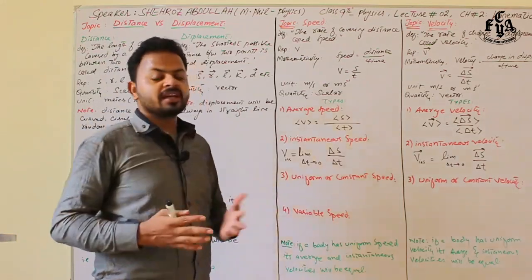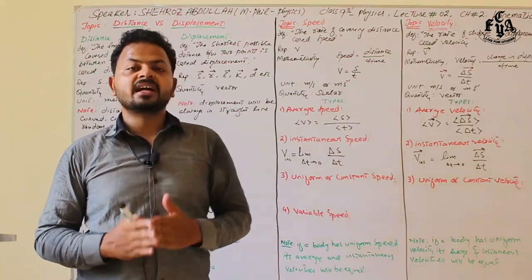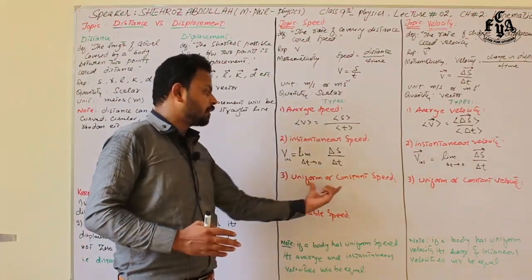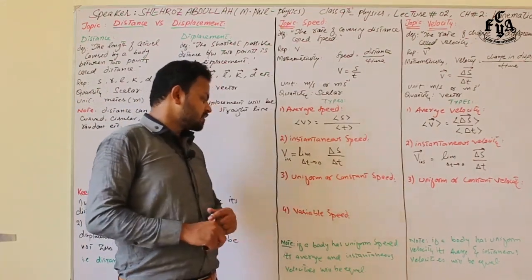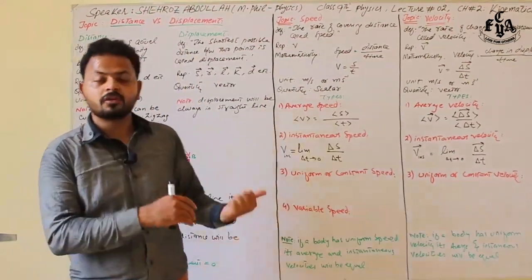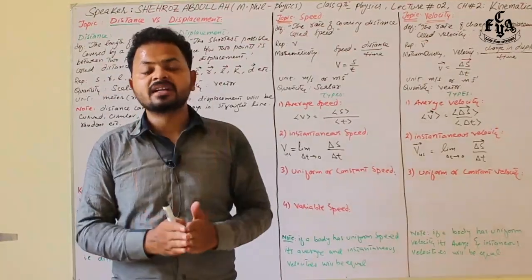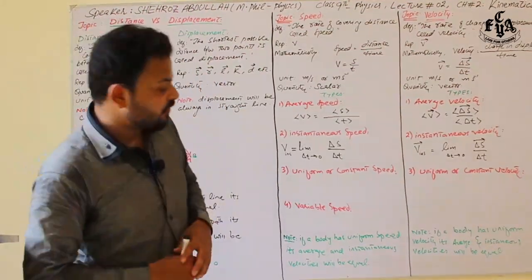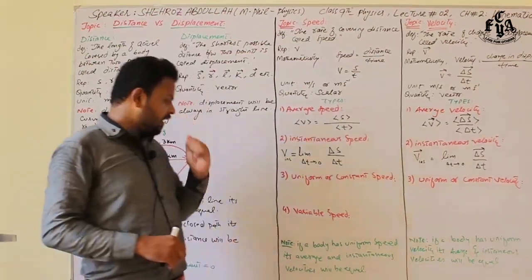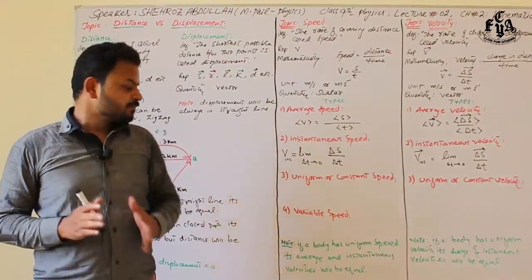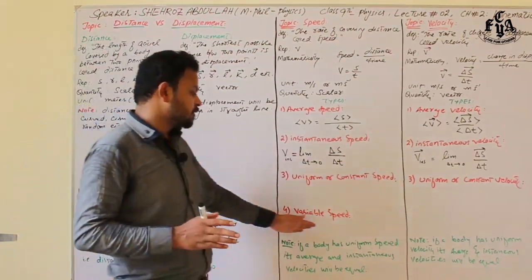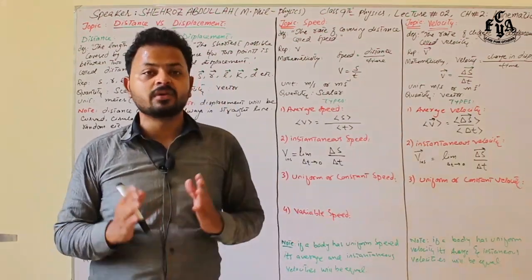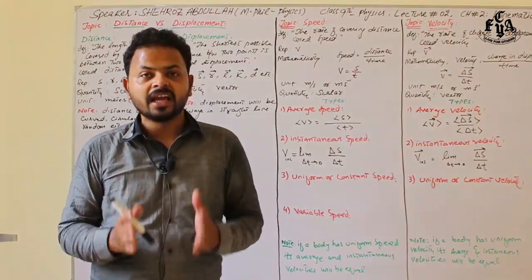Uniform or constant speed means a body covers equal distances in equal intervals of time. Variable speed is the opposite — a body covers unequal distances in equal intervals of time. Remember: if a body has uniform speed, its average speed and instantaneous speed will always be equal.